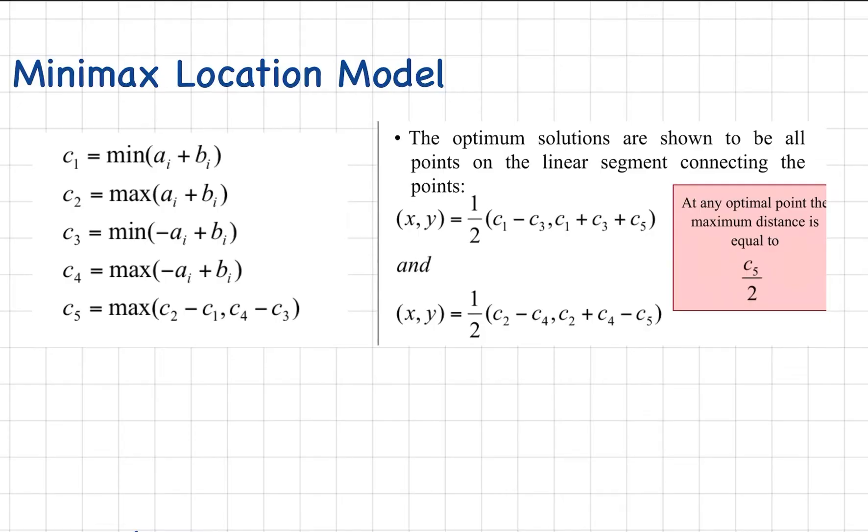The only difference with the two is that in Minisum, you are given the coordinate points of the machines and at the same time the weights. So the weights are denoted by the number of trips or the frequency that each machine is being moved in the facility. In Minimax location model, you are only given the coordinate points of the different location of facilities.